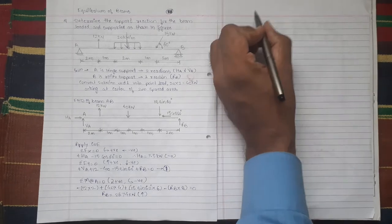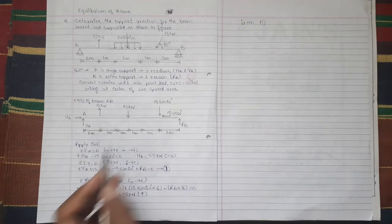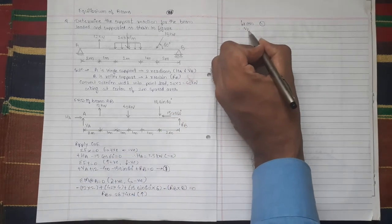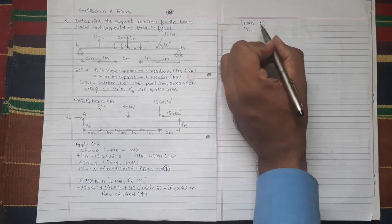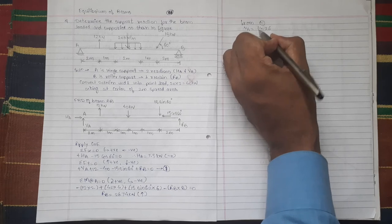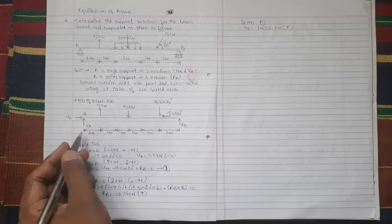Now from equation 1, we will get value of VA by putting value of RB. So from equation 1 we get value of VA which is equal to 14.26 kN. Positive value means our assumption VA acting upward is correct.